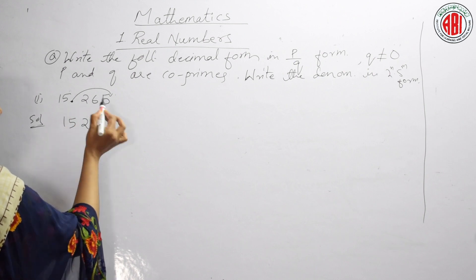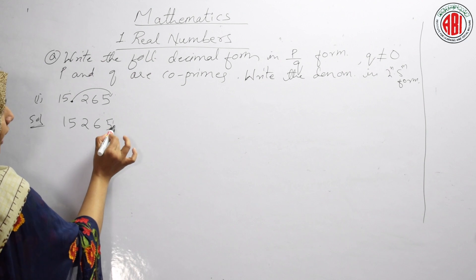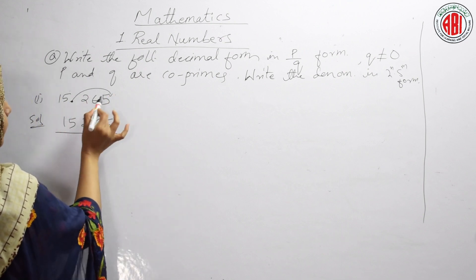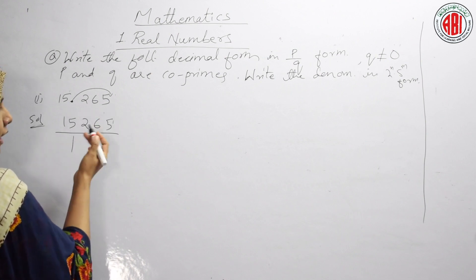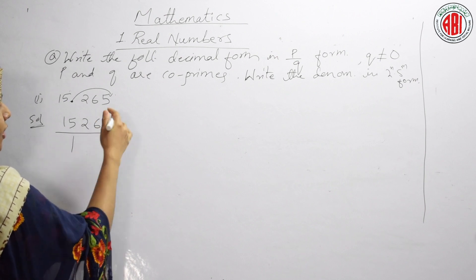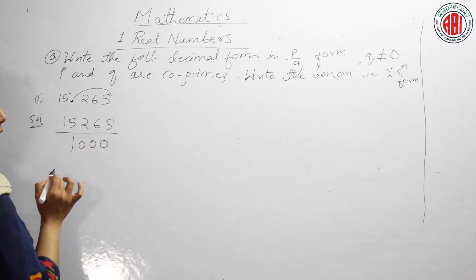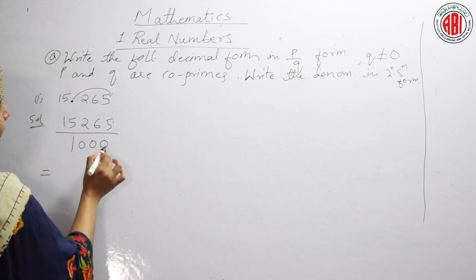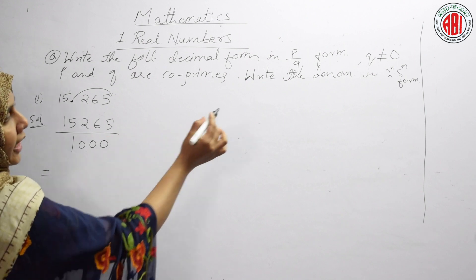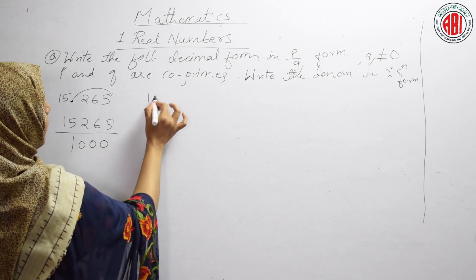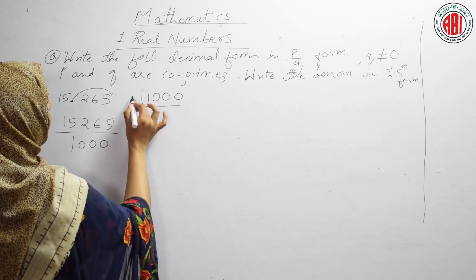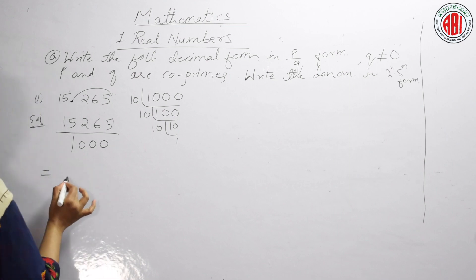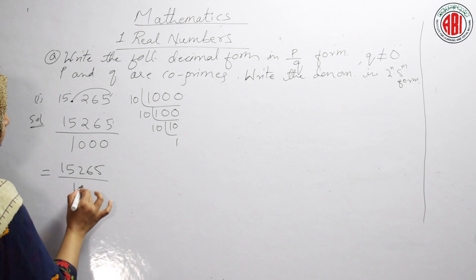This is 15.265 — we are shifting the point to the right side after the last digit. The point jumps three digits, so you have to add three zeros in the denominator, giving 15265/1000. We will factorize 1000: 10 × 10 × 10 = 10³. After factorization we get 15265/10³.